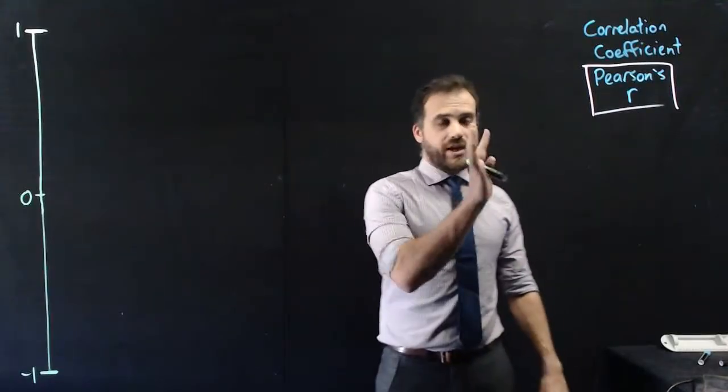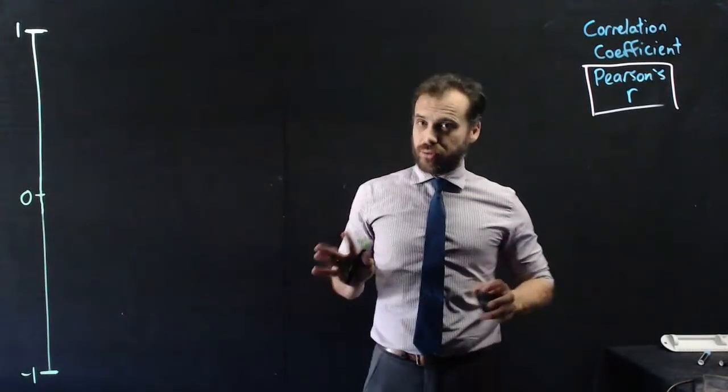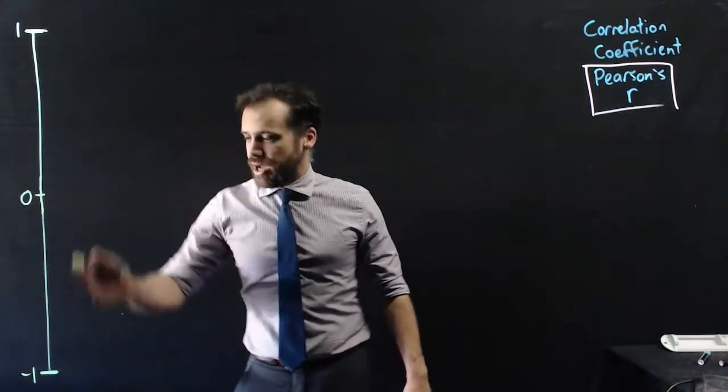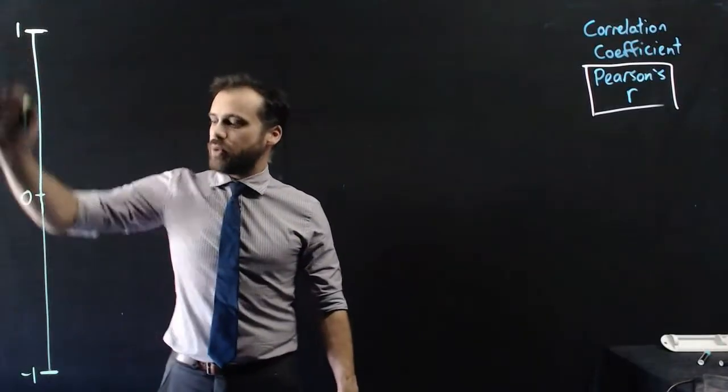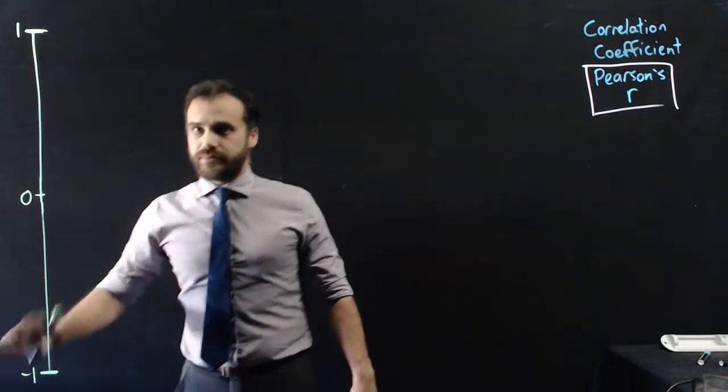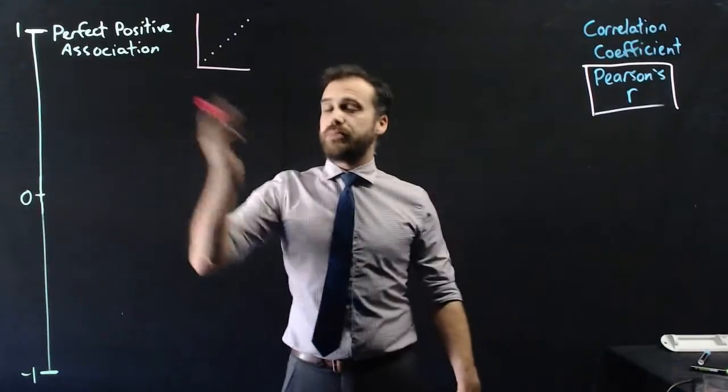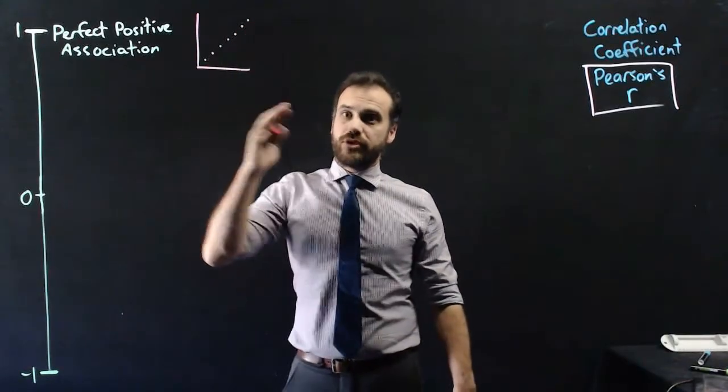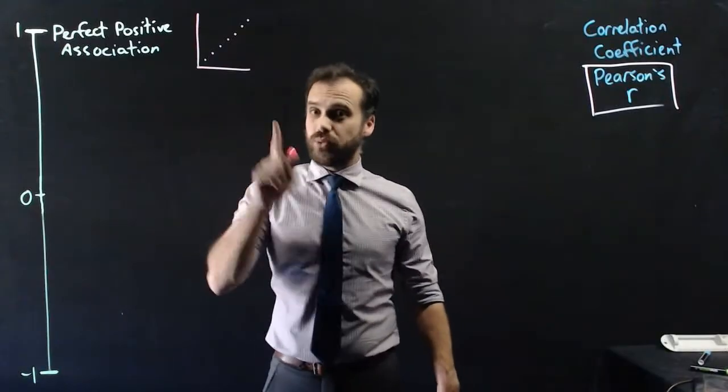Now I'm not going to get into the nitty-gritty of how to calculate it right now because it's really complicated, but I am going to explain it to you. We have Pearson's R correlation is a number between positive one and negative one. Now one is a perfect positive association. Dots that if you were to draw a line through, the line would go through every single one of those dots.